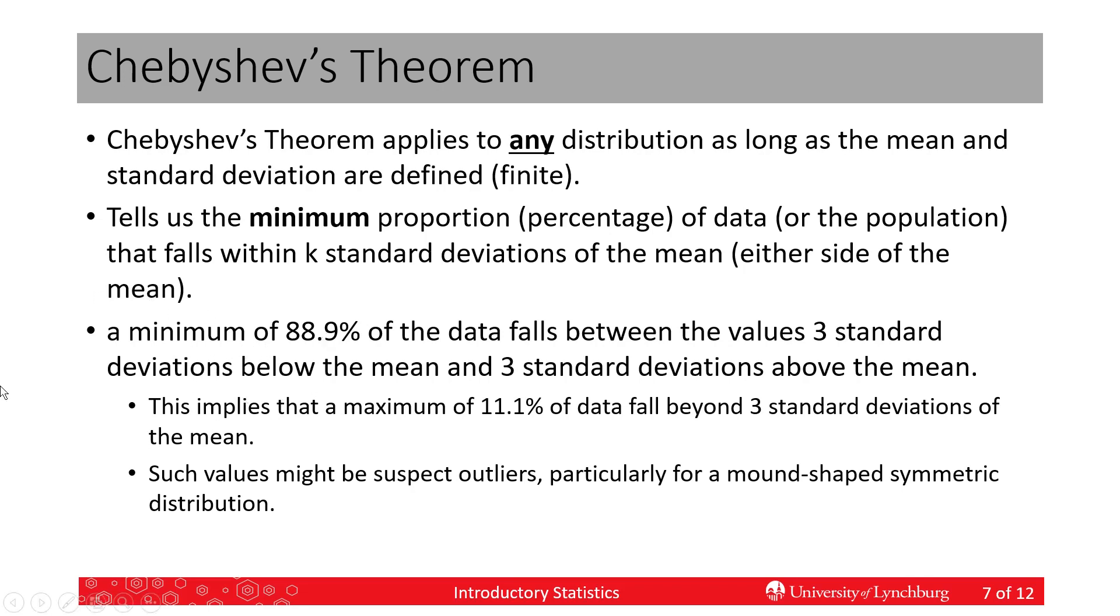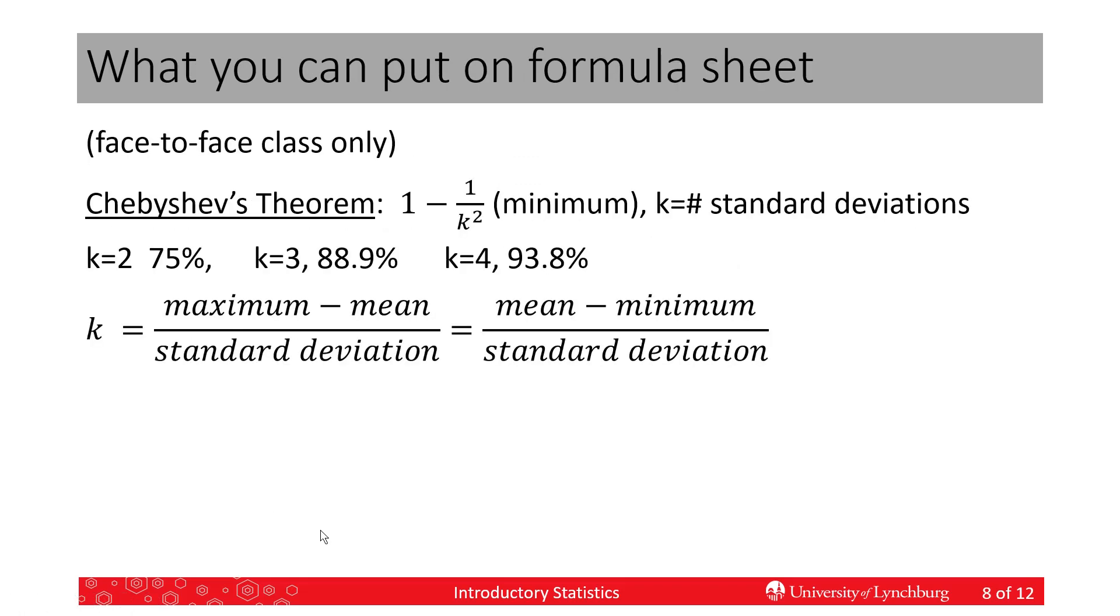That's three standard deviations below the mean and three standard deviations above the mean. So, if the minimum is 88.9%, then that also means that the maximum percentage of the data that's outside of three standard deviations on either side is 11.1% of the data. And, we may think that that's outliers. Those values are outliers if we have a sample. And, that would be very true if we had the normal distribution, the mound-shaped symmetric distribution. We definitely think they're outliers in that case. But, we'll get to that in Chapter 7.